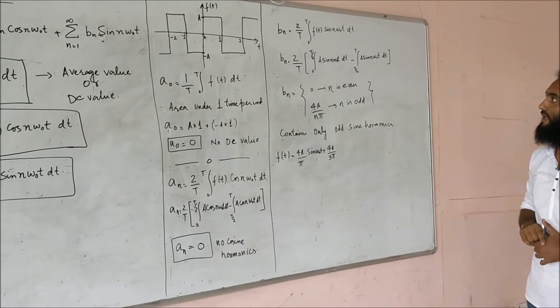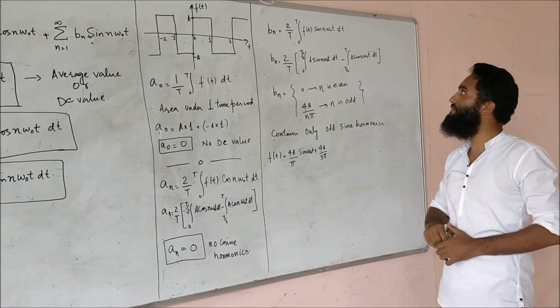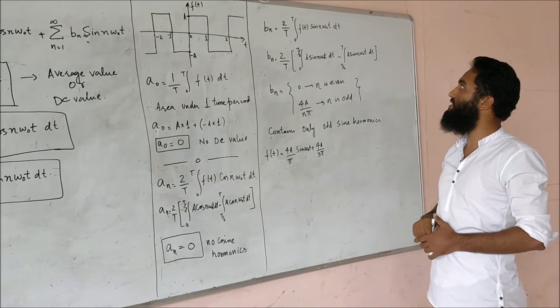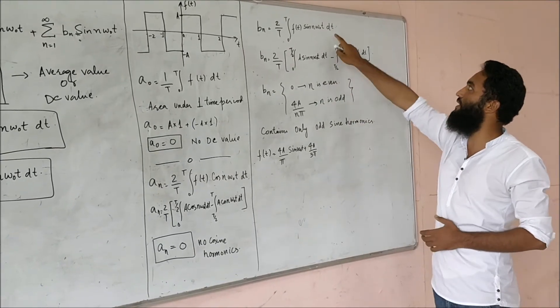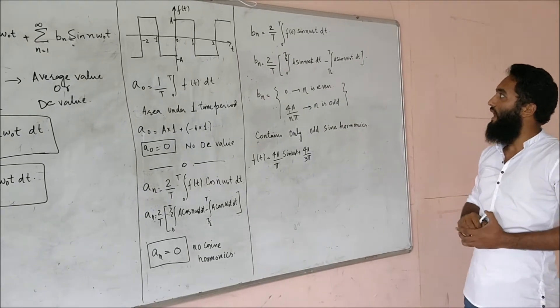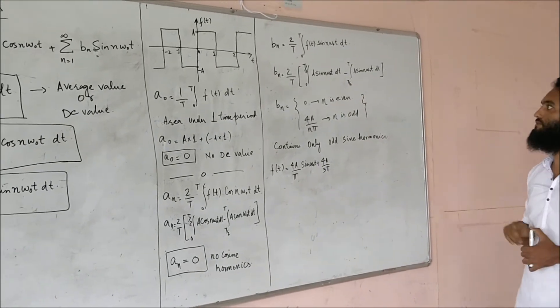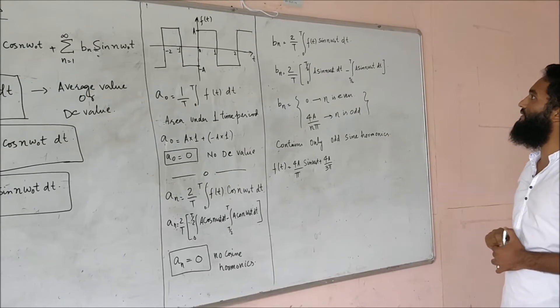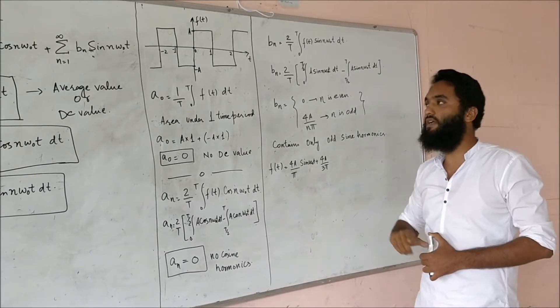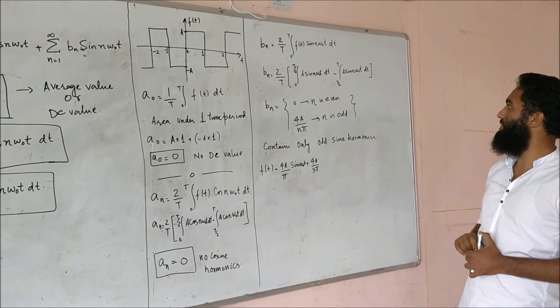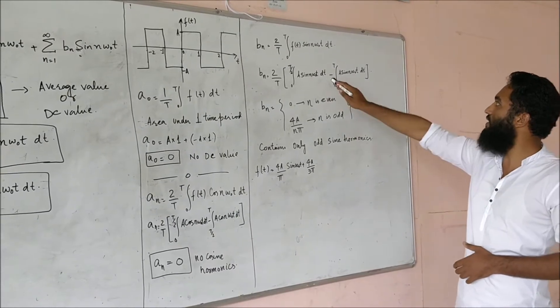Now, calculating the value of b_n, we see b_n equals 2 by T, 0 to T, f(t) sin(n omega_0 t) dt. Same thing happens here. This integral will be broken into two parts from 0 to T by 2 and T by 2 to T because this attains two different values. On solving this integral, I find a very interesting thing.